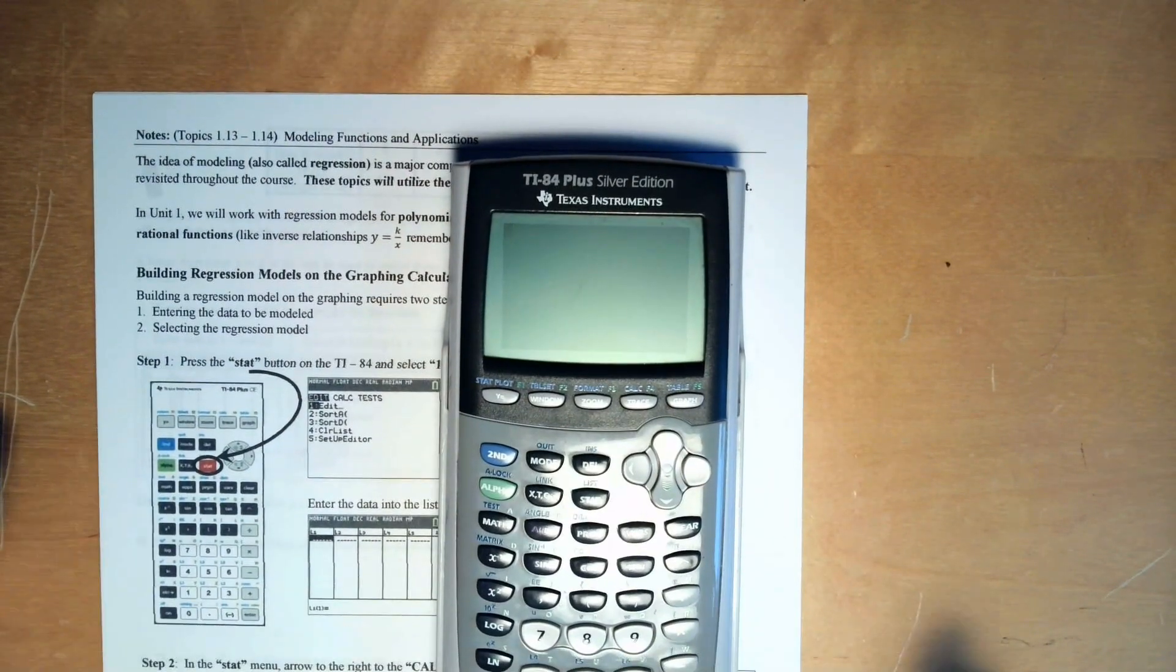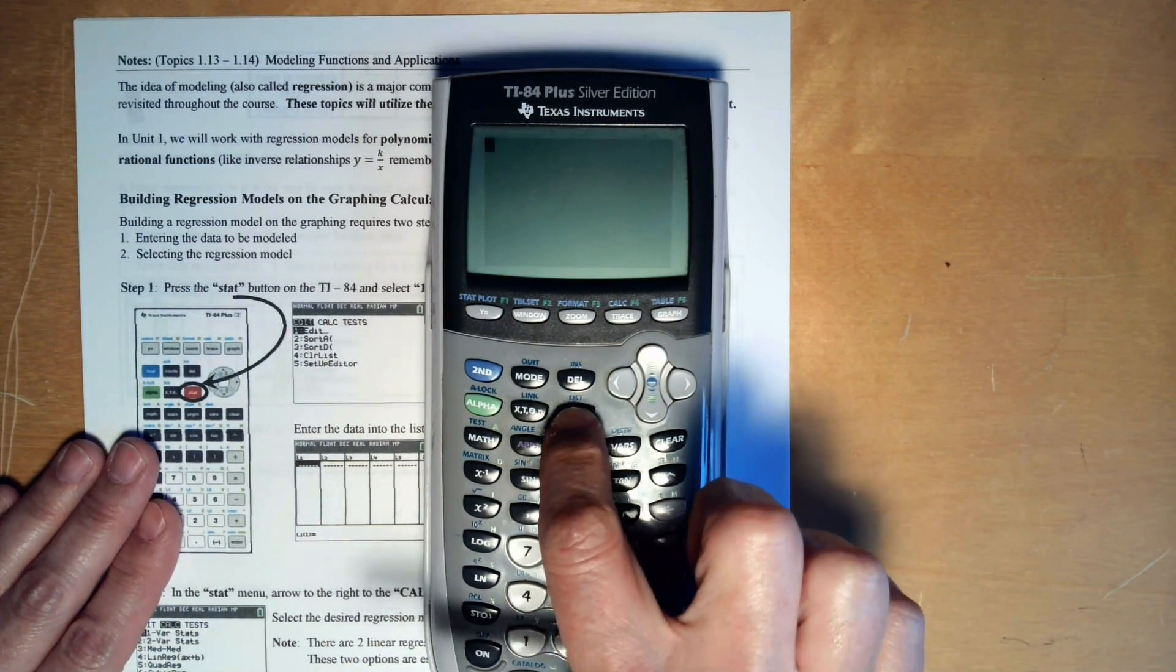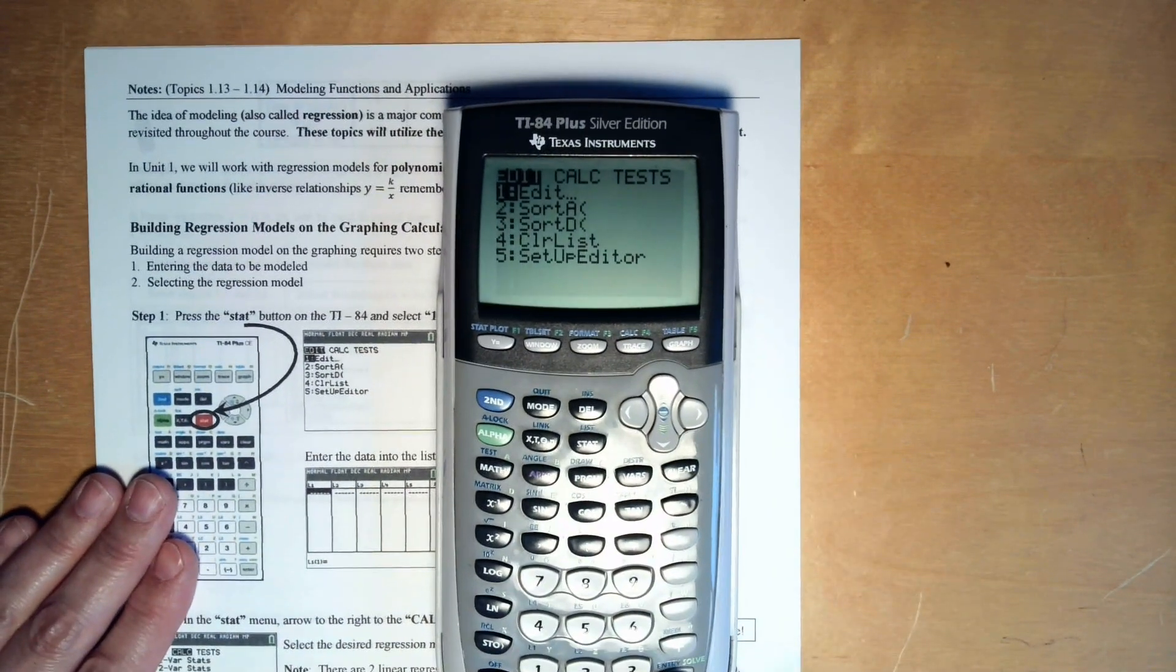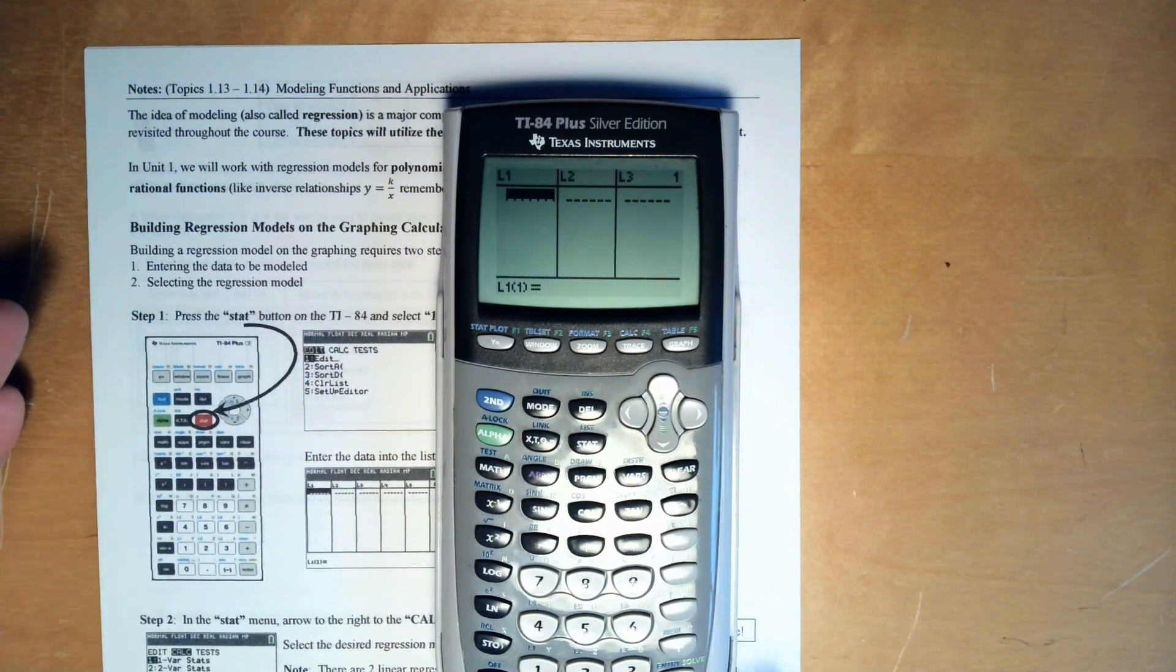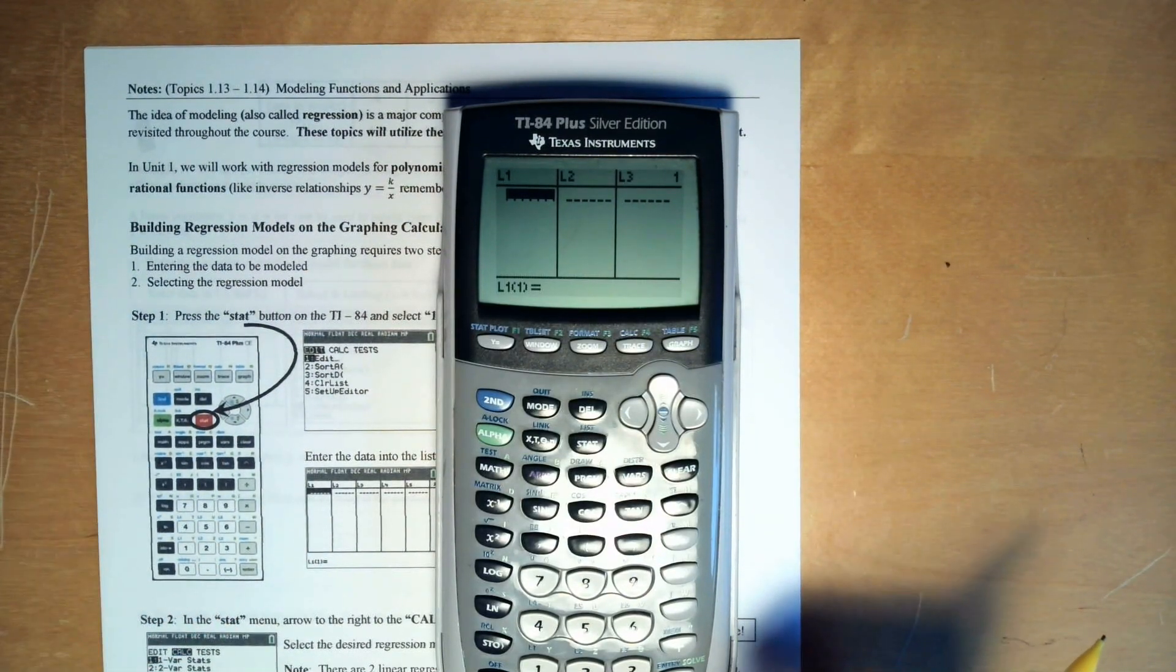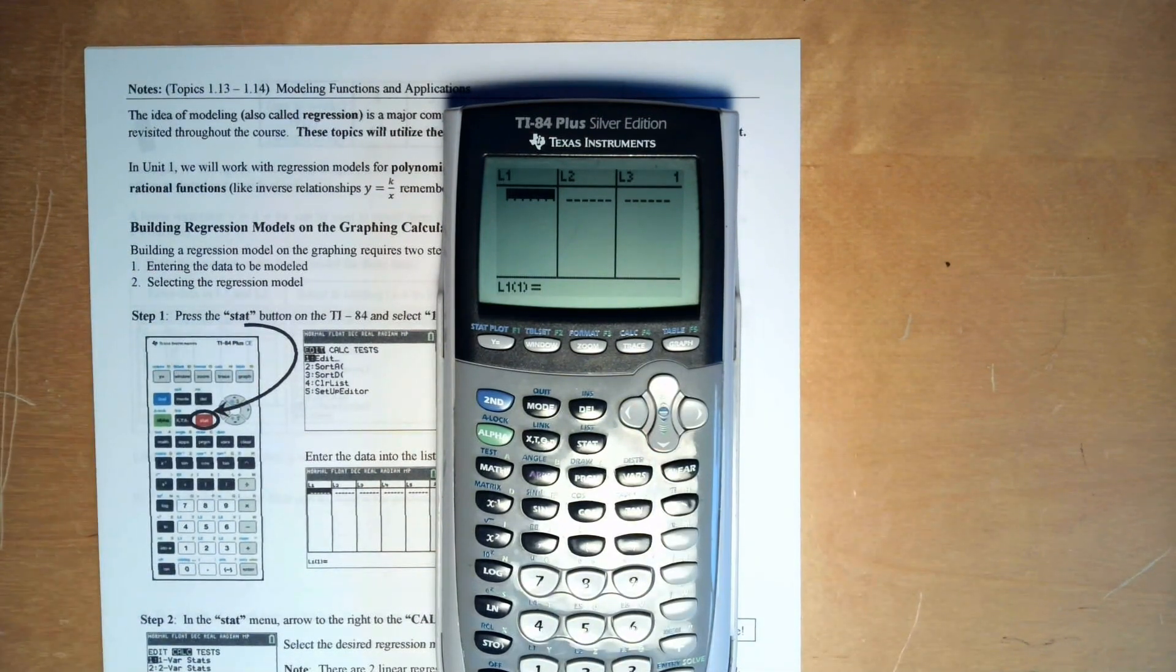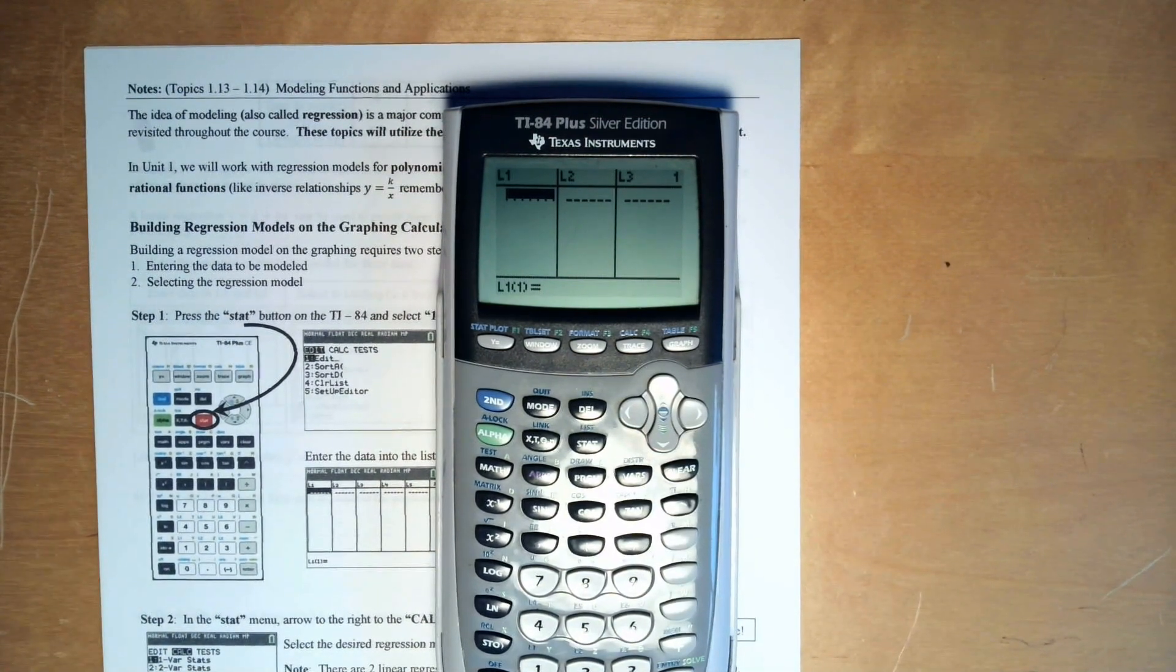Alright, so you're going to have to know how to put data in your calculator. So you're going to need to press the stat button. You press stat, you do number one edit, you've just cleared everything. So there should be nothing in your list. If there are things in your list because you don't clear your calculator, you need to go to the top, press clear and enter. It clears it out. Anyway, so you put your lists in there.